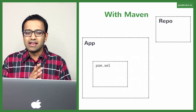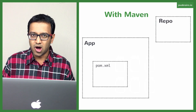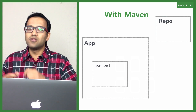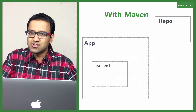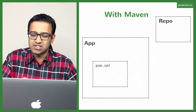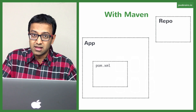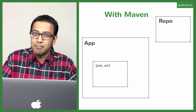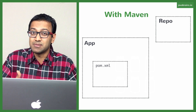Maven lets you declare all the dependencies that you want in a single file. You don't have to download the jars and add them to your classpath. You mention what jars you need in this file, which is called pom.xml. This file contains a list of all your dependencies that Maven needs to know. Maven is your dependency management tool.